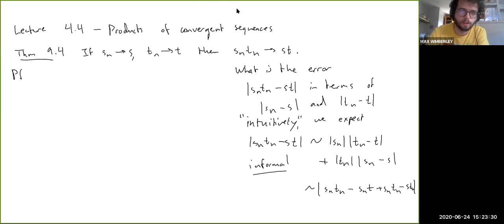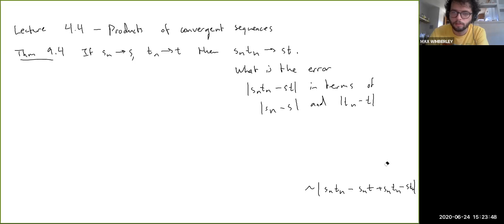So here's the proof. Well, actually, we'll still be doing some scratch work. So let me do this. If we rewrite, in fact, I'm going to go back over, I'm going to erase this stuff. And I'll just write the correct, the precise, correct way to phrase this now. So we can rewrite Sn Tn minus St to be Sn Tn minus Sn T plus Sn T minus St.